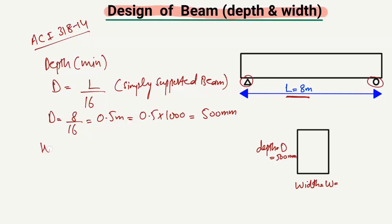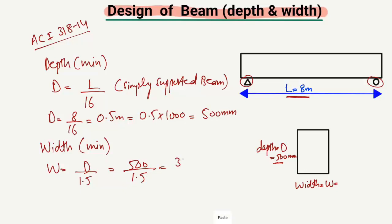Now, what is the minimum width of the beam? The width is equal to d divided by 1.5, where d is the depth. The minimum depth is 500 millimeters, so we put 500 millimeters divided by 1.5. By dividing, we get 333 millimeters. So the minimum width of this beam is 333 millimeters.